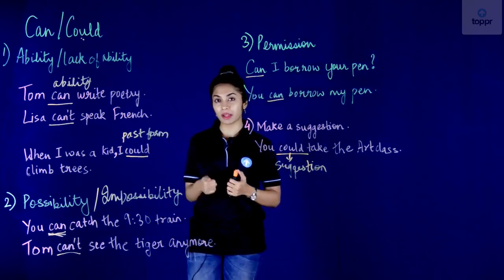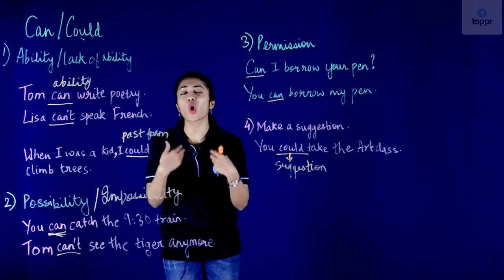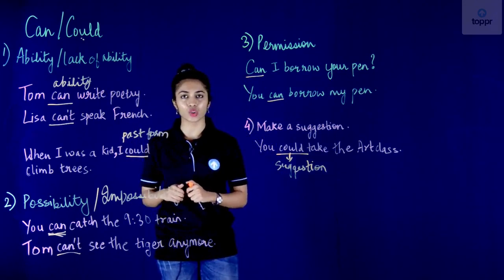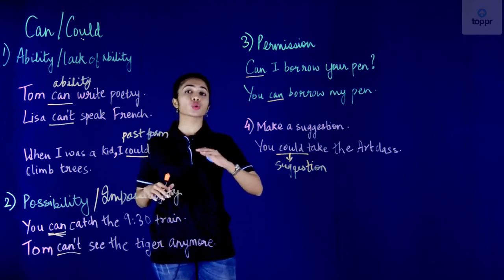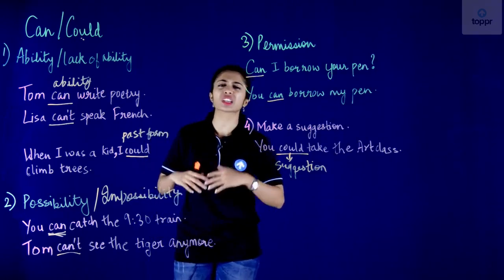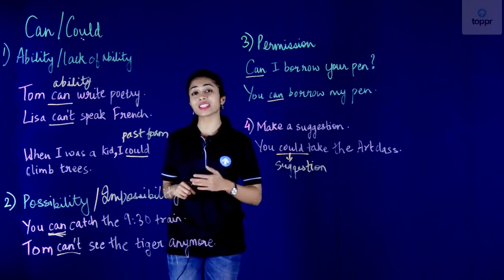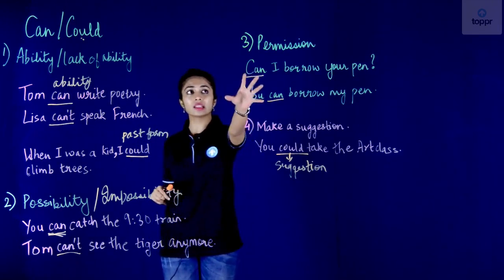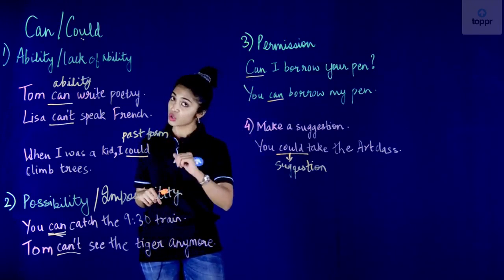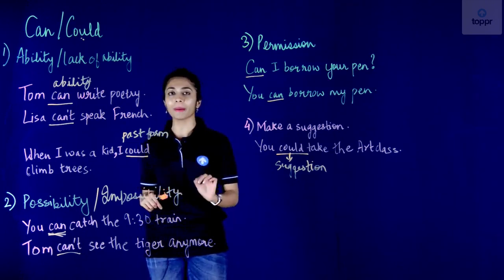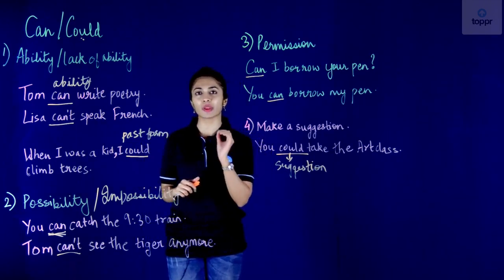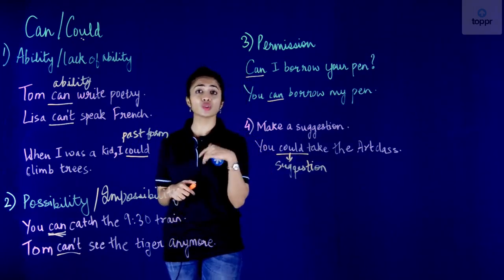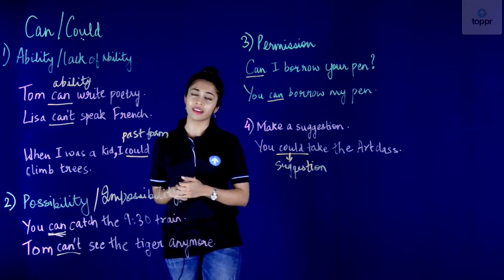So these are the four functions of the modals can and could. First: ability or lack of ability. Second: possibility or impossibility. Third: asking and giving permission, as in 'Can I borrow your pen? Yes, you can borrow my pen.' And fourth: making a suggestion, as in 'You could take the art class.'